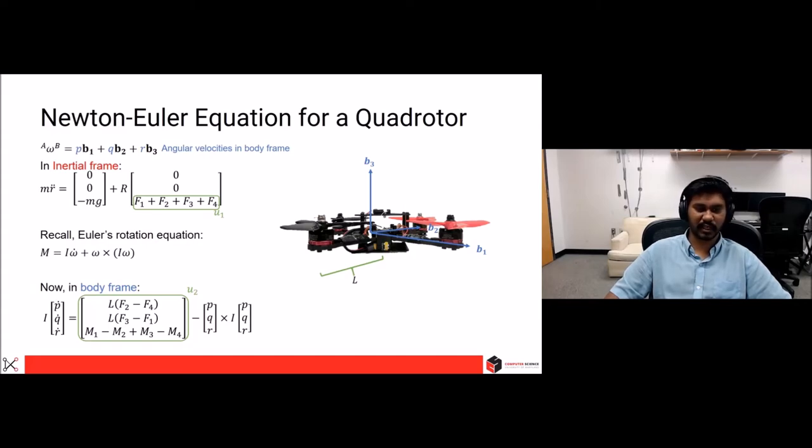The reason why two of the moments and two of the forces are opposite in direction is because two of the motors spin in opposite direction to the others, and they're diagonally separated. And minus PQR cross I into PQR.